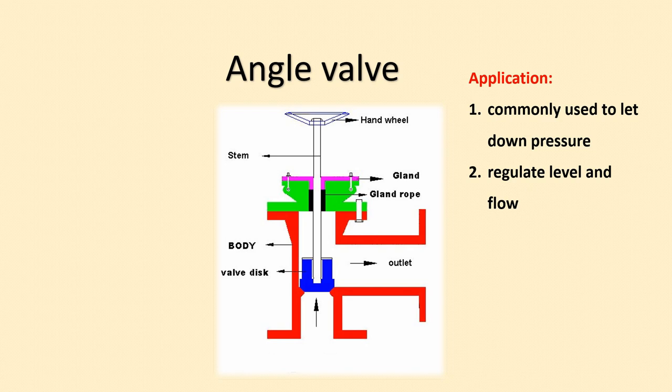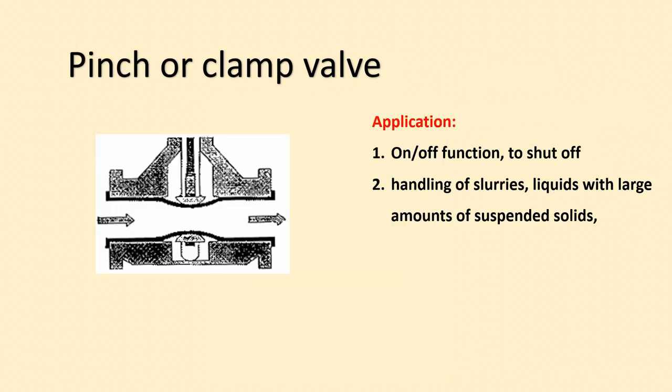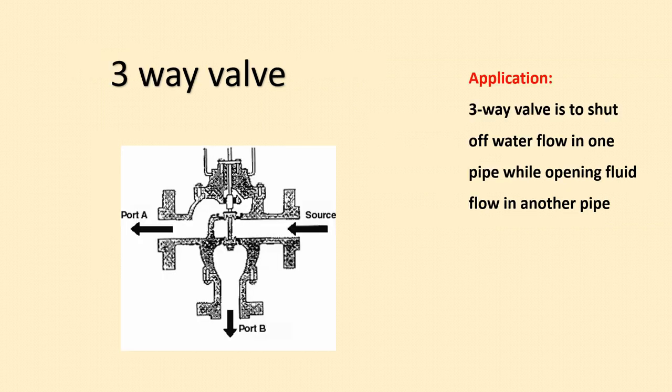Next is the pinch or clamp valve. The body is made of soft material, so it gives the best result in on-off function, mainly for full tight shut-off. The best feature of the pinch or clamp valve is that it can handle slurries, chemicals, and liquors that contain high amounts of suspended solids.